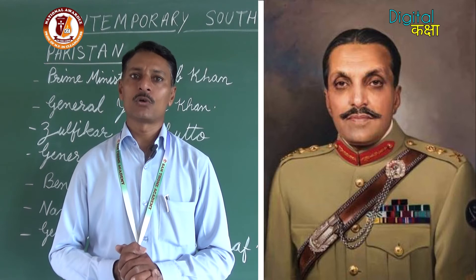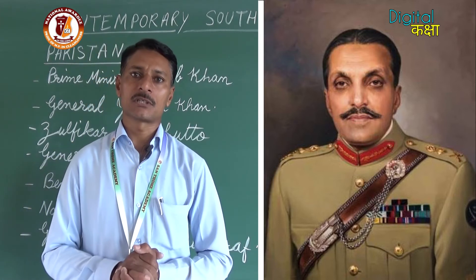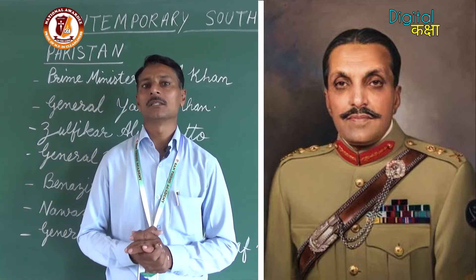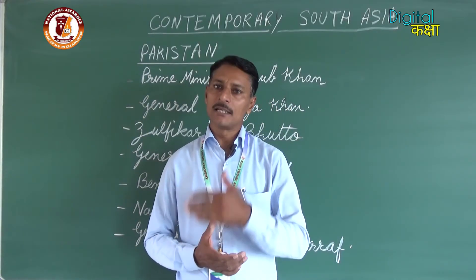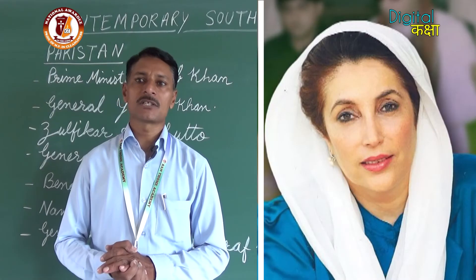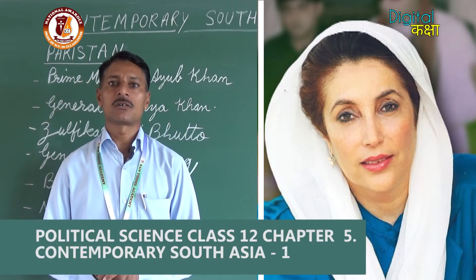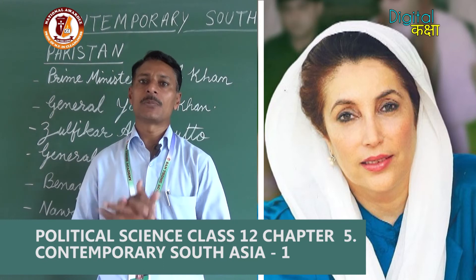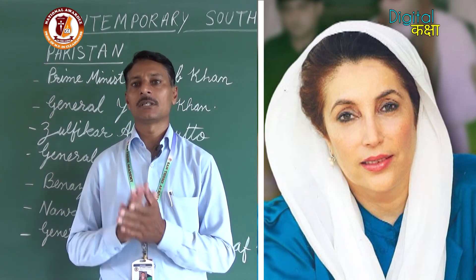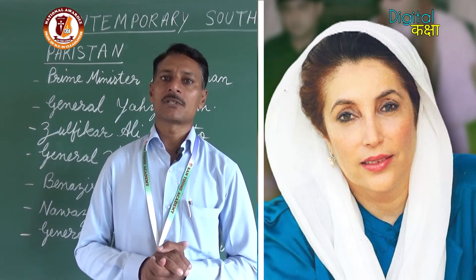General Zia-ul-Haq had to face a pro-democratic movement in the country in 1982, and since then he was criticized by the public due to growing demand for democratic government. Again in 1988, an elected government was formed as a result of such movements — a democratic government was established under Benazir Bhutto. However, her government faced tough competition from the Pakistan People's Party and the Muslim League, the oldest political party.